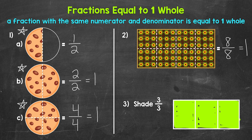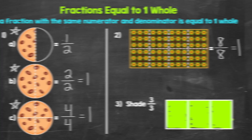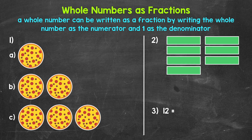Let's move on to writing other whole numbers as fractions. The most simple and basic way to do this: we can write any whole number as a fraction by writing the whole number as the numerator and one as the denominator. So we just write the whole number over one, and it's as simple as that.